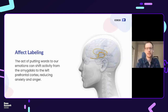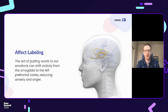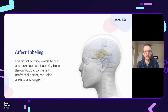Affect labeling is another method, which may be surprising to some: simply by putting our feelings into words, we can actually impact our affective state. Recent studies incorporating fMRI brain scans have found that affect labeling reduces activity in the amygdala, helping to diffuse stress and agitation, while shifting activity to the left prefrontal cortex, which is used for planning and emotion regulation.